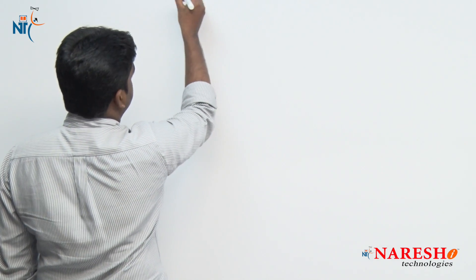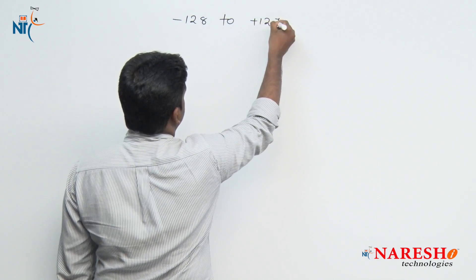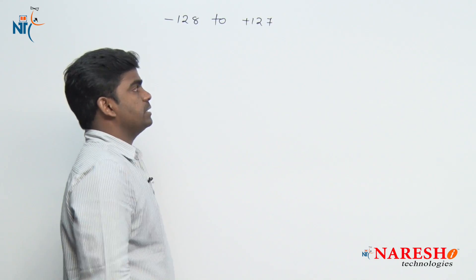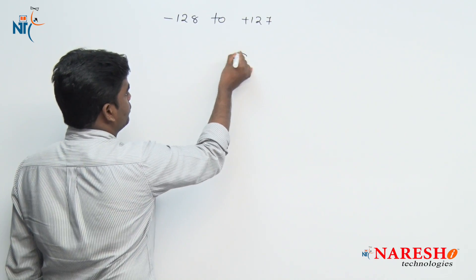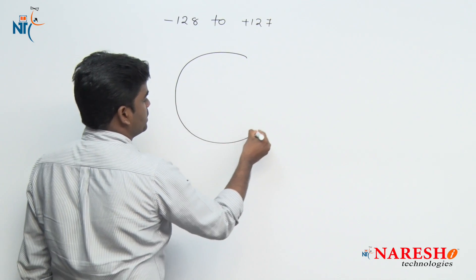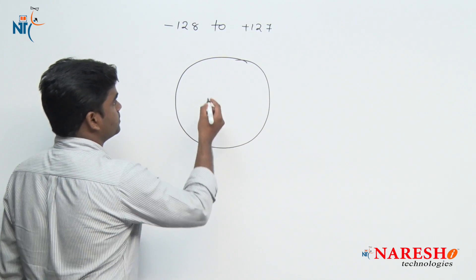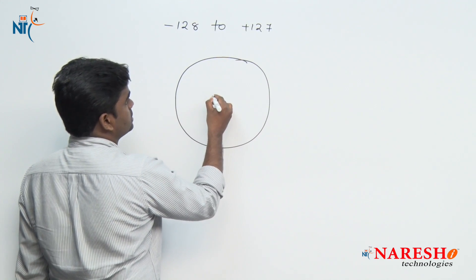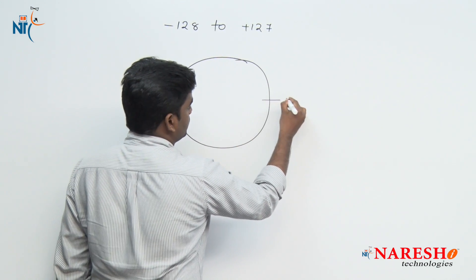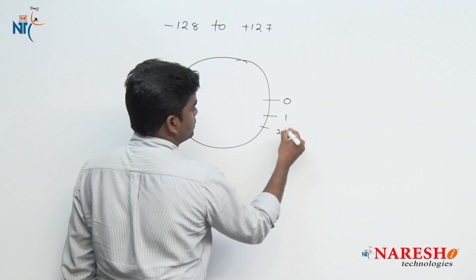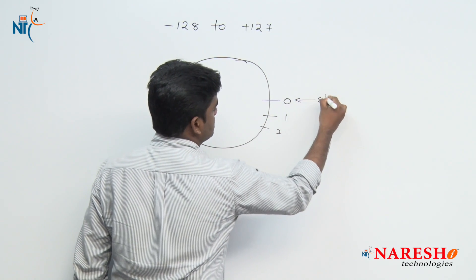First, we will see unsigned character and signed character represented in the form of circles. If it is a signed character, the limits are minus 128 to plus 127. We are writing all these limits in the form of a circle because based on these circles we will see how programs will execute. Counting starts with 0 — this is the starting point.